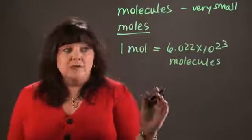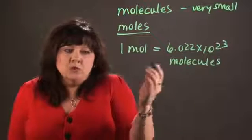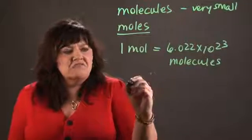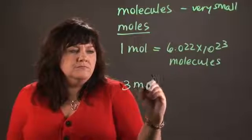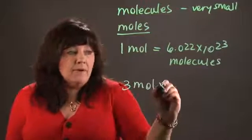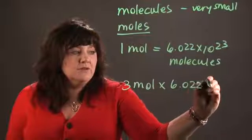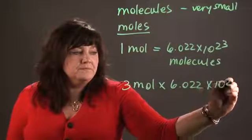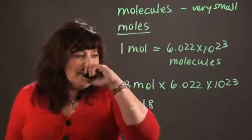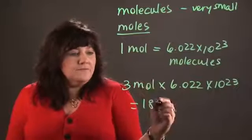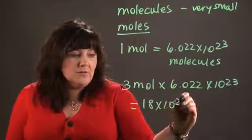Anytime you want to figure out the number of molecules you have, you take the number of moles. So let's say that I have 3 moles. I would multiply that by Avogadro's number, 6.022 times 10 to the 23rd. And I would get somewhere in the neighborhood of 18 times 10 to the 23rd molecules.